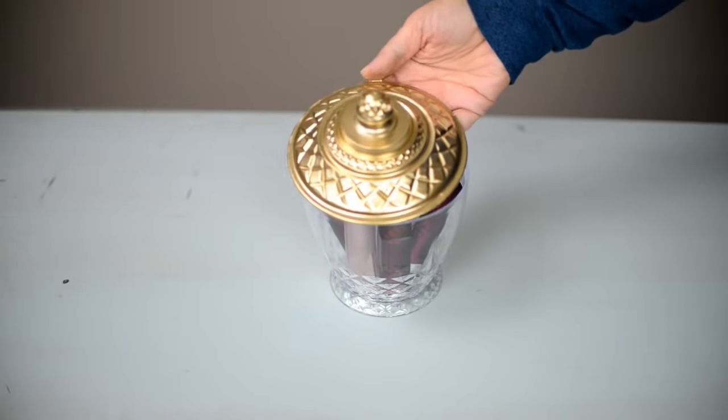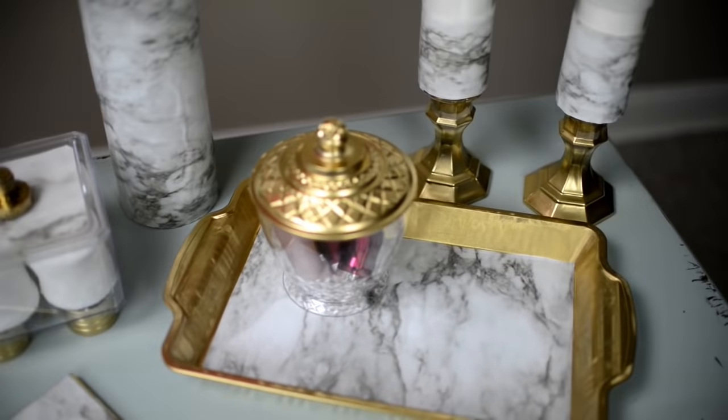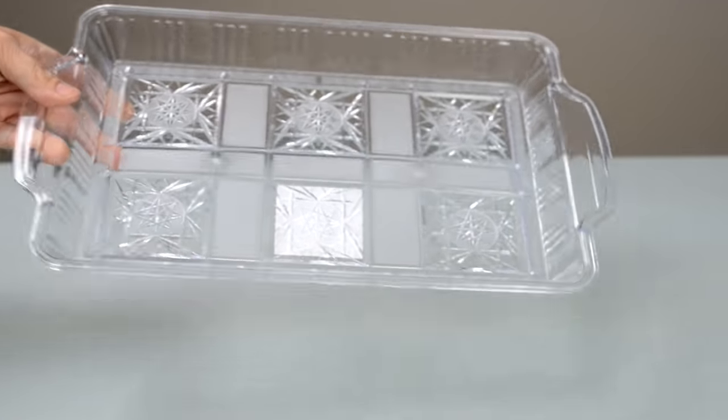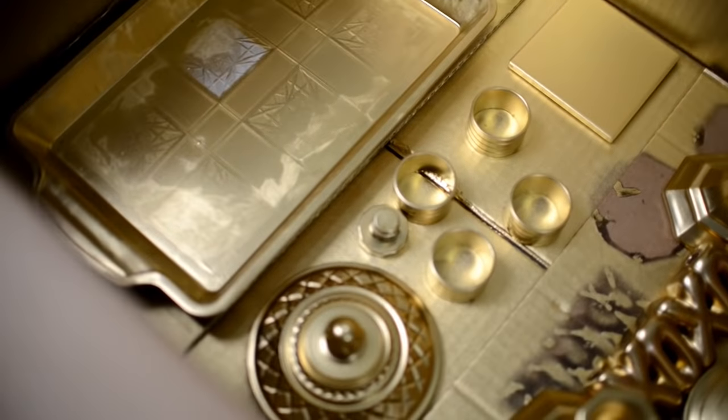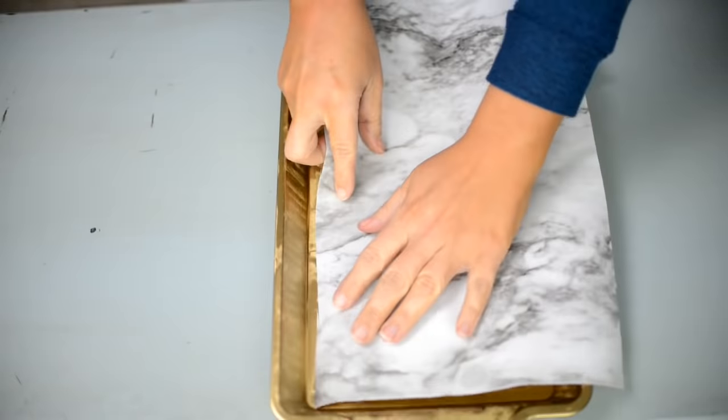Next, we're going to work on the tray. I got a plastic tray in the party section, spray painted the whole thing gold, and I'm going to line the center with marble paper. I'm going to use that same technique where I run my finger along the edge and get an idea of how long it needs to be.